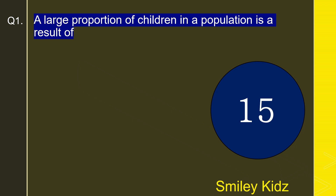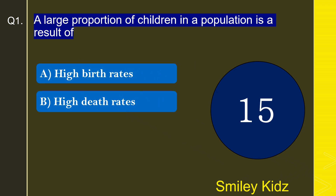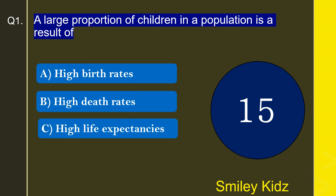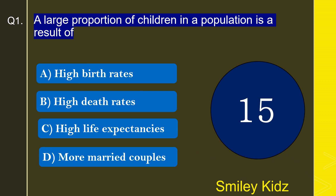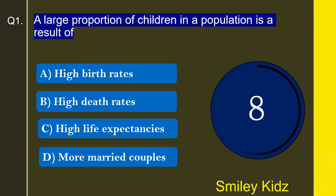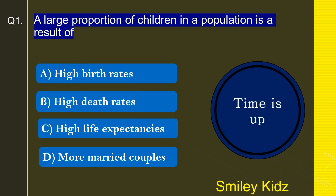Question number 1: A large proportion of children in a population is a result of — high birth rates, high death rates, high life expectancies, or more married couples? The correct answer is high birth rates. A large proportion of children in a population is a result of high birth rates.